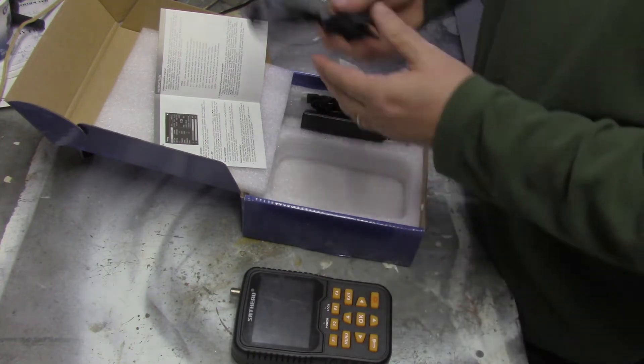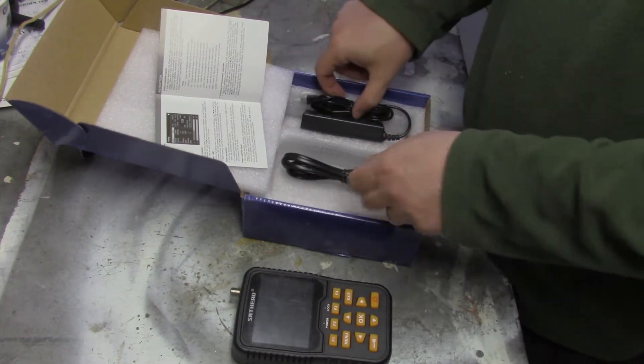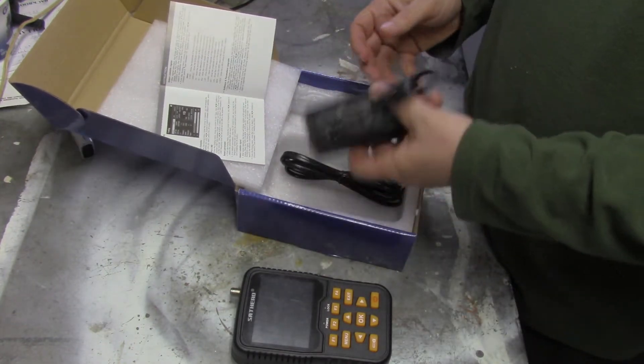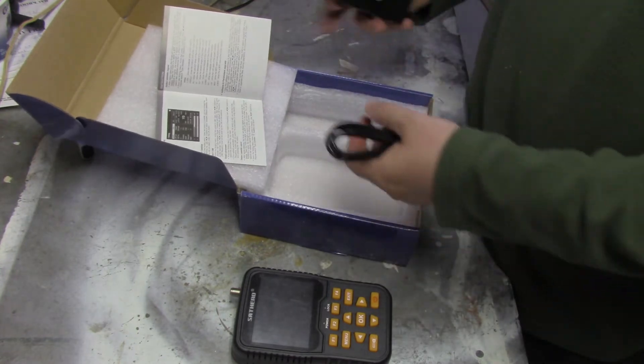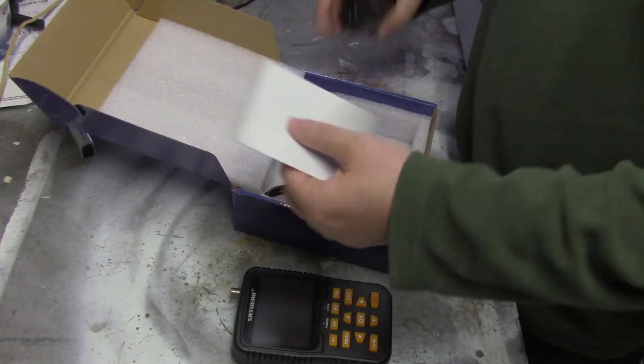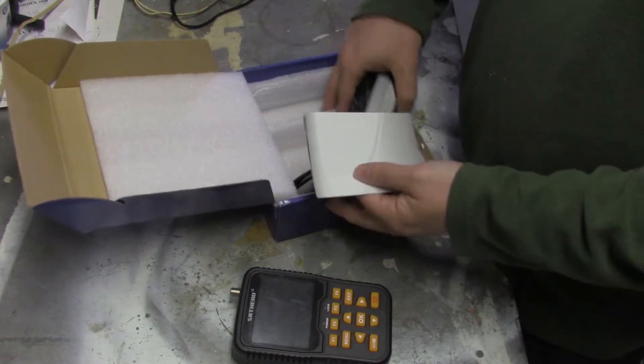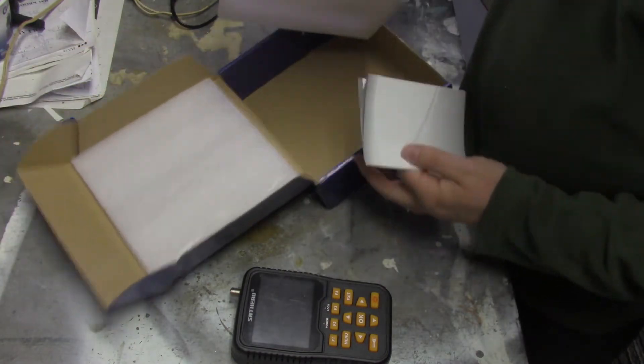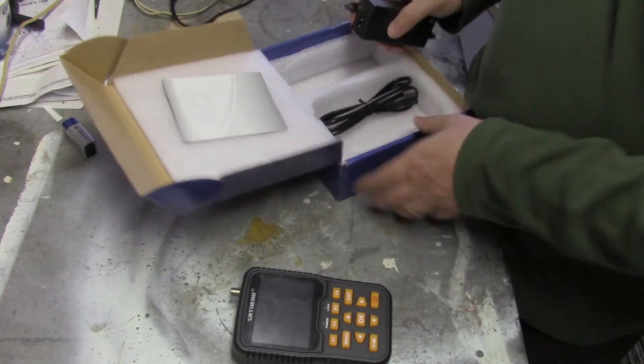Obviously, I'll need to charge it, but here's the charger. I've got the cable here for plugging in the charger. So here's what it comes with: the manual, the charger, and the SatHero.